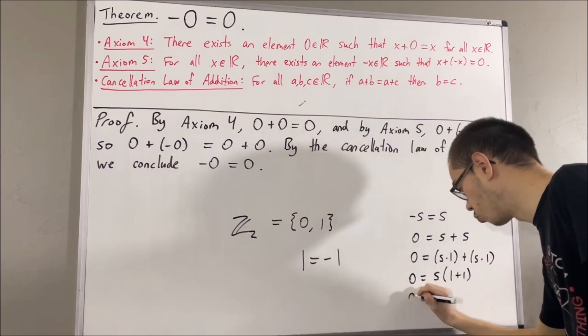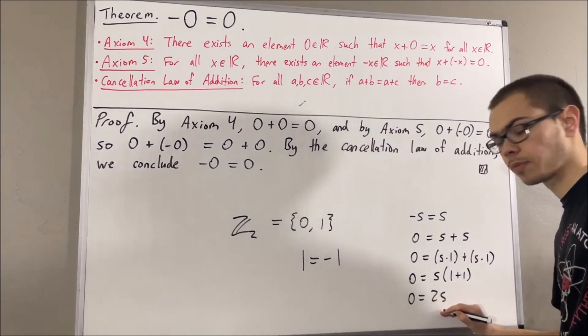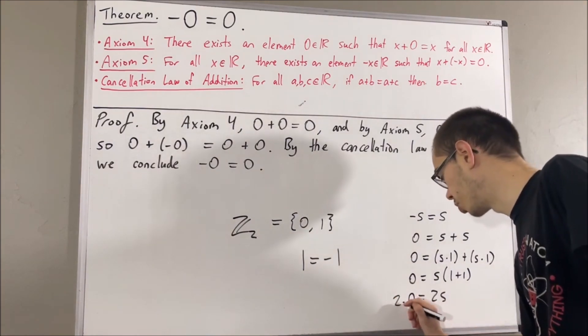And, for shorthand, we can write 1 plus 1 as 2. So, this is really just 2 times S. And clearly, zero is equal to 2 times 0.